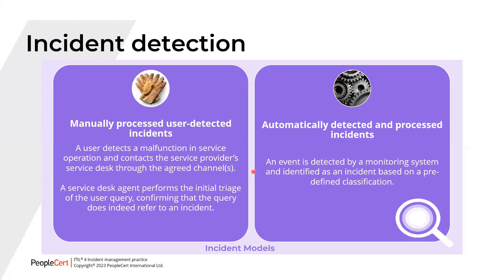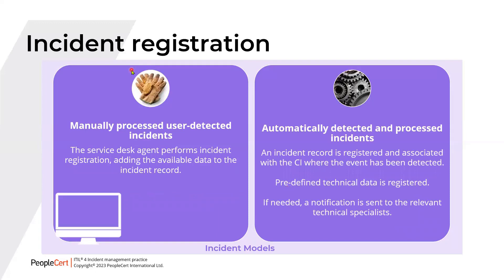There may be specific incident models. We are considering two incident models: user-based detection and automatic detection. For incident registration with user-detected incidents, the service desk agent performs incident registration, adding the available data to the incident record. When automatic, the record is registered and associated with the CI where the event was detected, predefined technical data is registered, and if needed, a notification is sent to the relevant technical specialists.